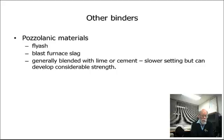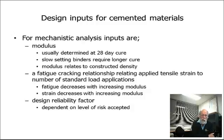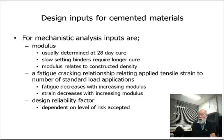Other pozzolanic materials — fly ash and blast furnace slag — are generally blended materials, slow setting but can develop very considerable strength. They generally won't suffer shear failure, but they will fatigue and generally will shrink. When dealing with layers of bound materials, you need to do a mechanistic analysis — empirical charts aren't available. You need to do the CIRCLY modelling.